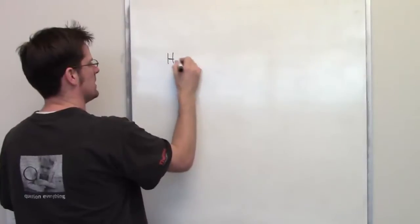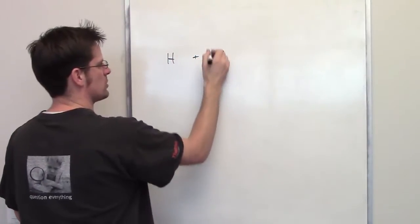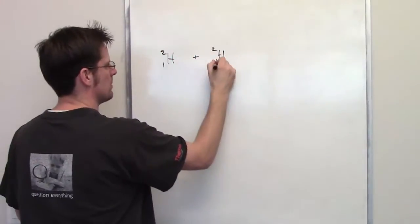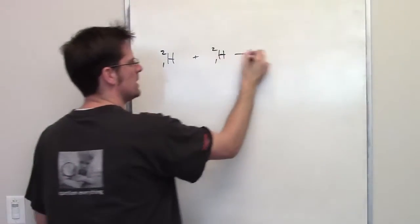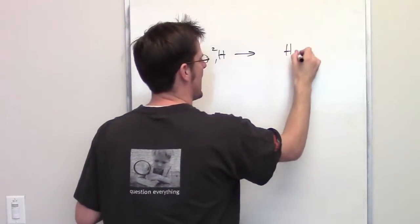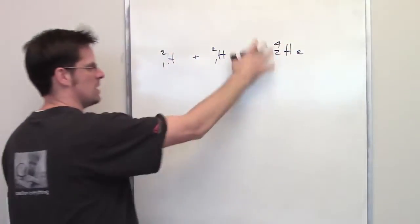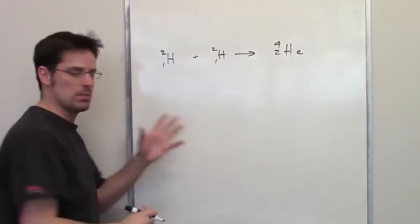Let's go ahead and write that up here. So I've got two separate atoms of hydrogen 2, once again that's called deuterium, they both have an atomic number of 1, collide together to form one atom of helium, whose atomic symbol with mass and atomic number is shown there.